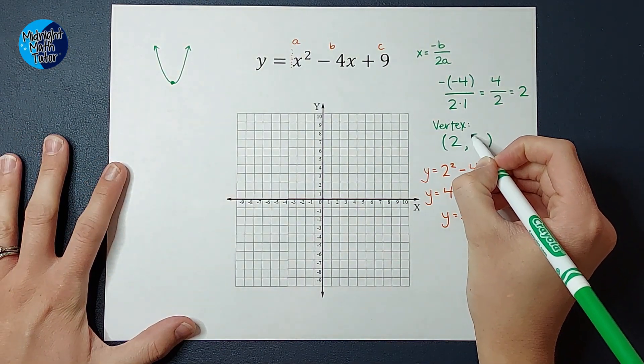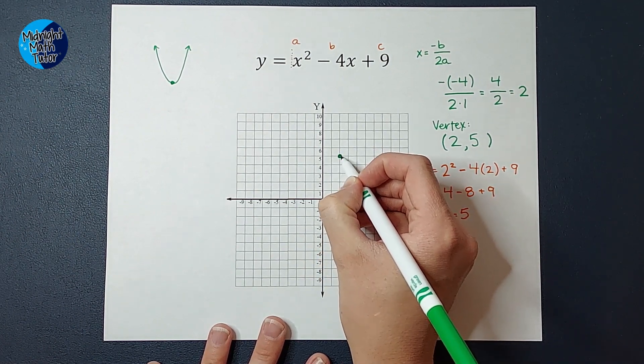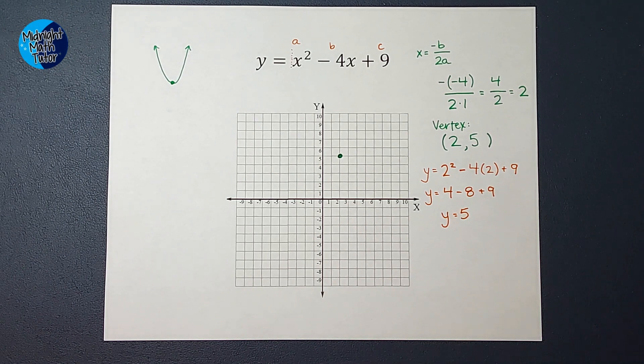So look, I have my vertex now, 2, 5. So I'm going to go over 2, up 5. And that is the vertex of my parabola.